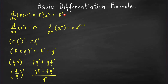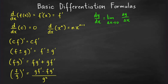Let us use the prime notation (Lagrange notation) for the derivative of a function f. The first differentiation formula tells us that the derivative of any constant with respect to x is equal to zero. From the definition of the derivative, dy/dx is the limit as delta x approaches zero of the change in y over change in x. For a constant function, any change in x produces no change in y, so this limit is always zero.